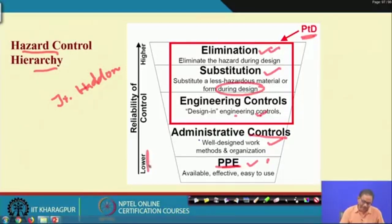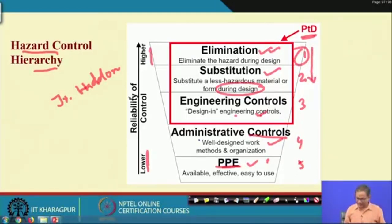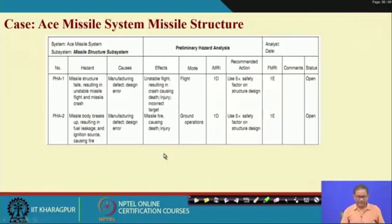PPE is the last resort and is also important because hazard occurrence is probabilistic — whatever you do, there is always a chance. PPE is least effective but is a must. Elimination has the highest reliability and PPE the lowest. The execution order should be rank 1 (elimination) through rank 5 (PPE), from highest to lowest reliability and effectiveness.